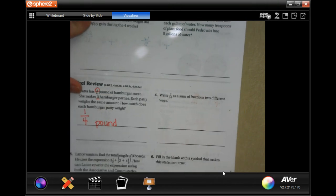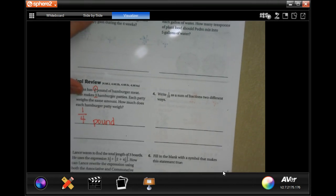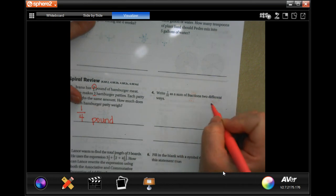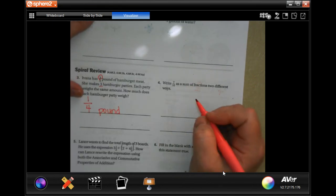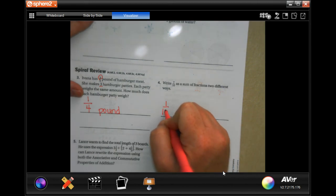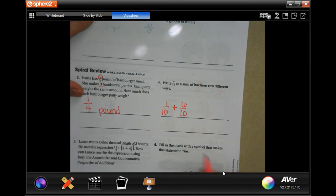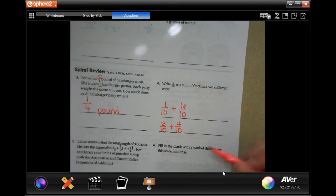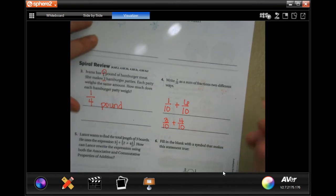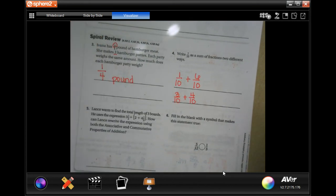Write seven-tenths as a sum of fractions two different ways. So, we could put one-tenth plus six-tenths. We could put three-tenths plus four-tenths. You could do five-tenths plus two-tenths. Anything that equals seven. Just add anything up to seven. Pretty easy, y'all.